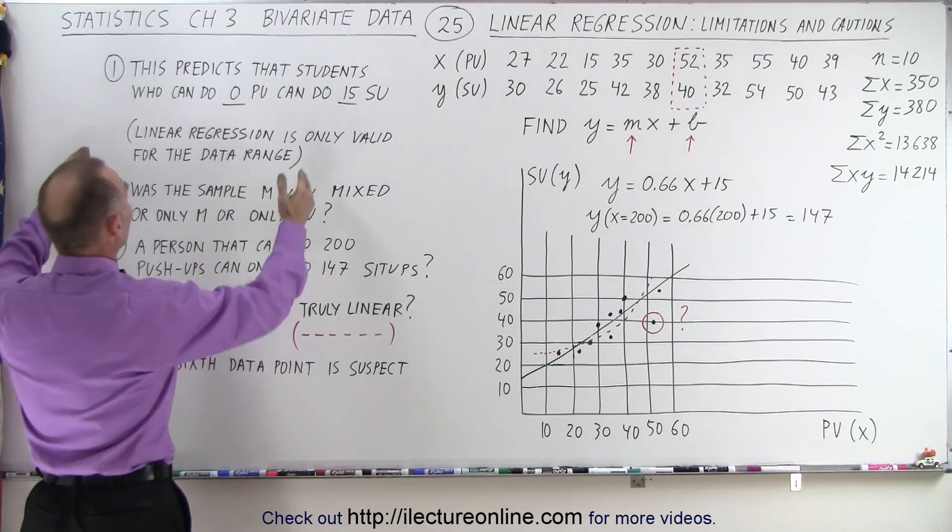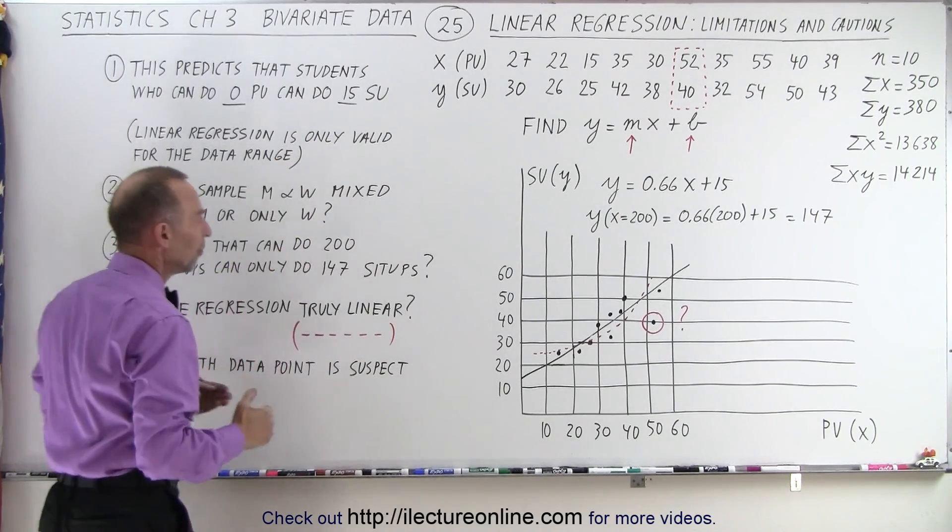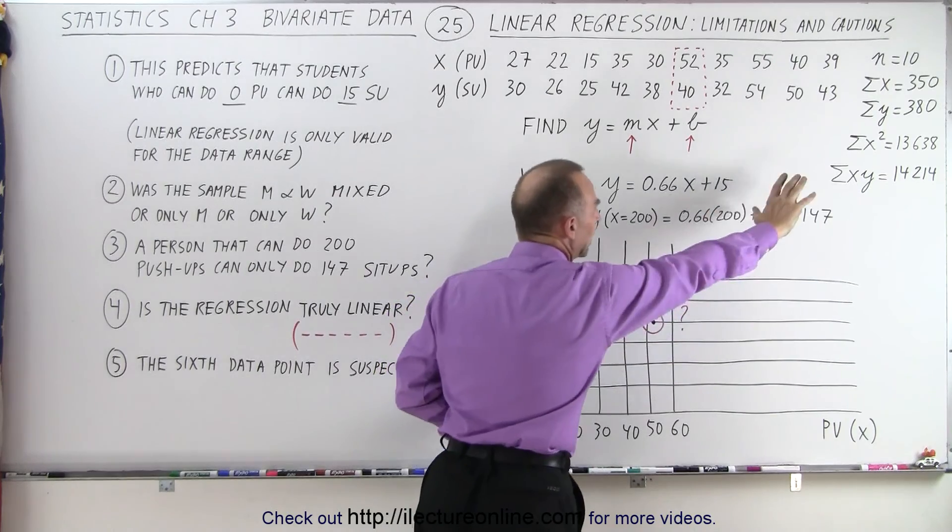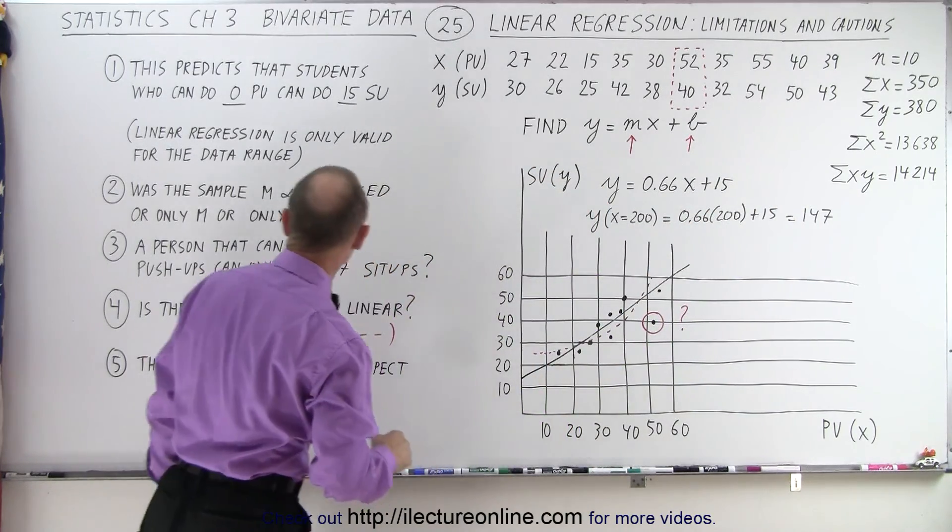So the suggestion is that our linear regression is only valid for the data range, that we can only look for values in here, not for way out there, and not for way over under the other direction.